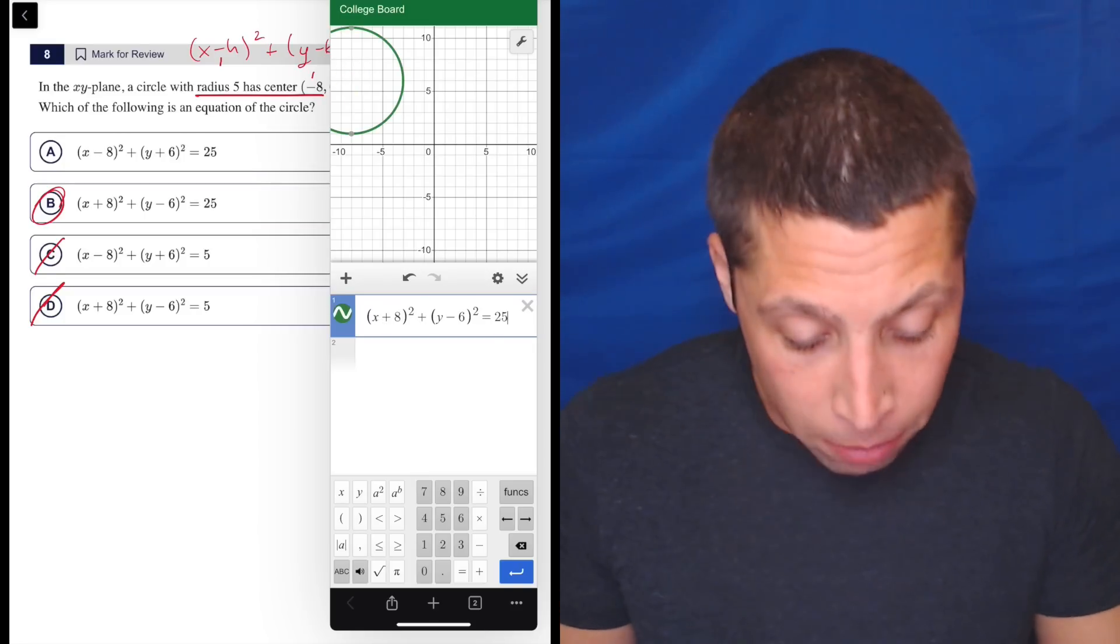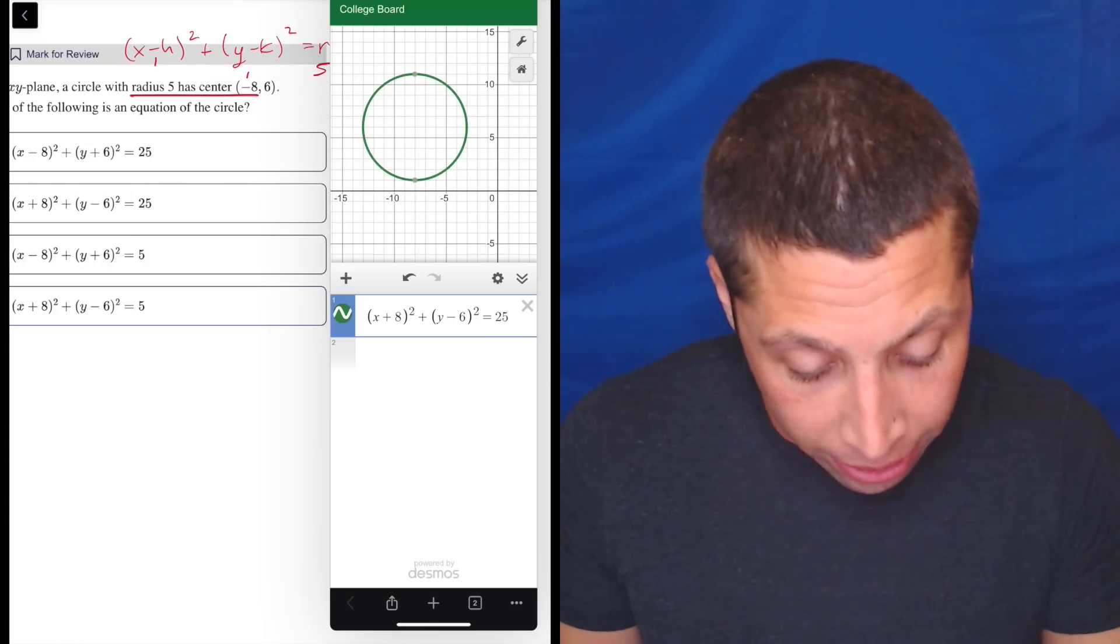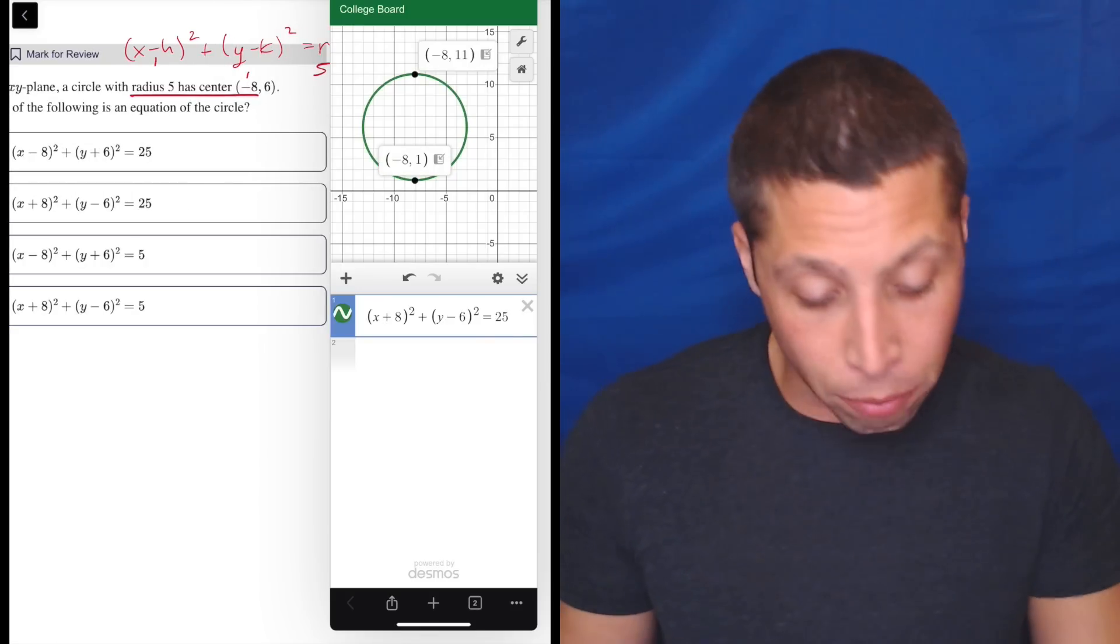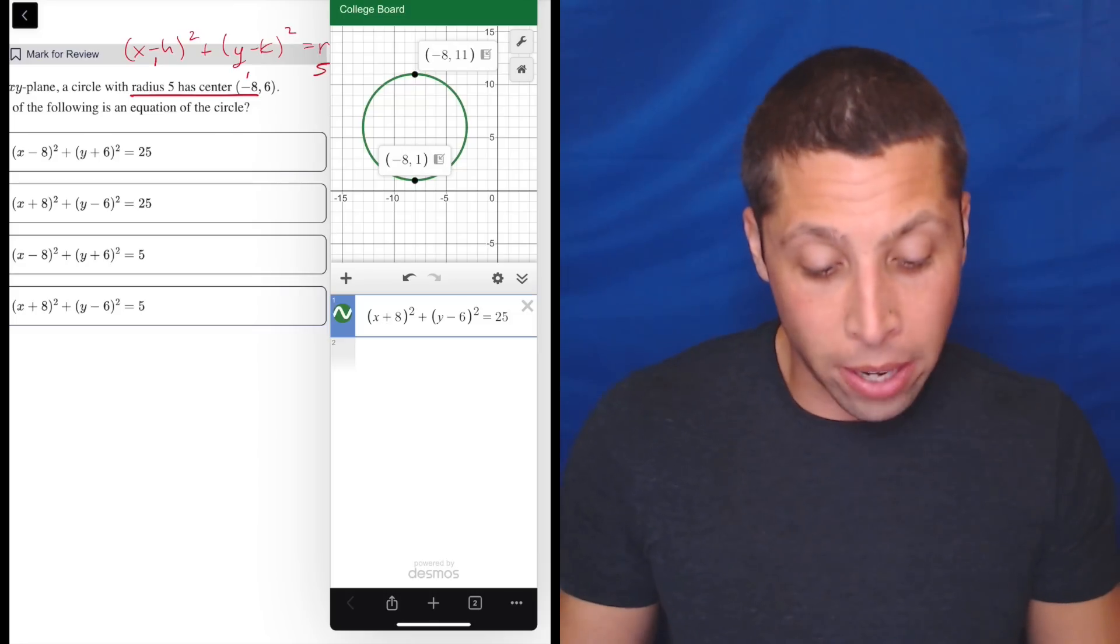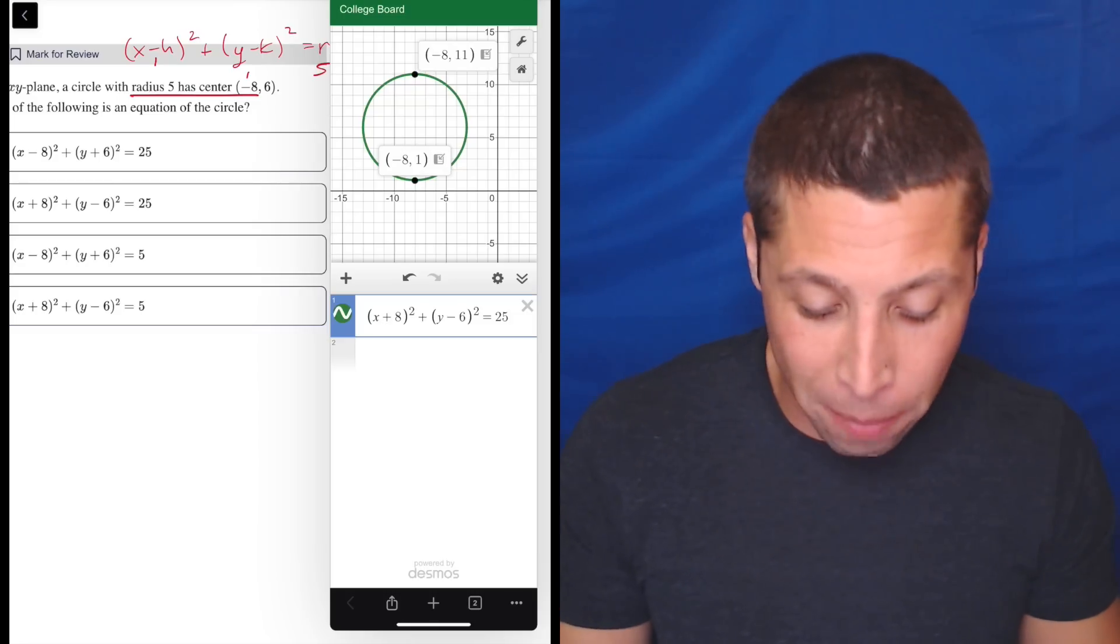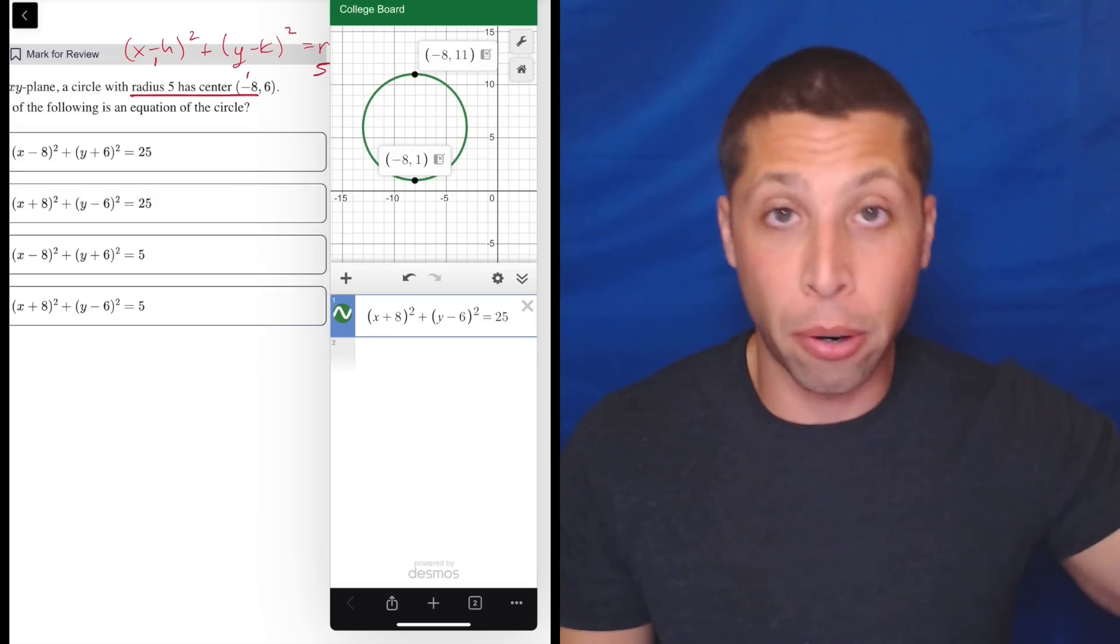And then just look at it. Does it seem like what they were saying? Is the center negative eight, six? Yeah, negative eight kind of is my x coordinate there. And then halfway between 11 and one would be basically six, five greater than one. So there you go, that makes sense. And then we can also see the radius is five because that's a diameter of 10.